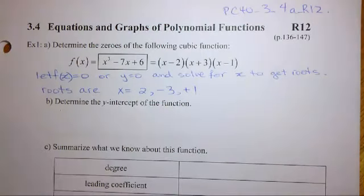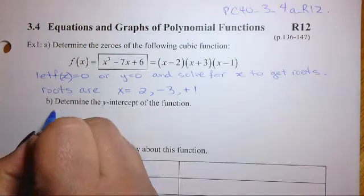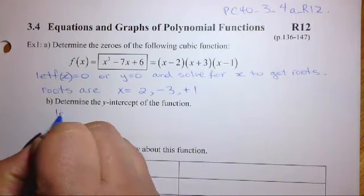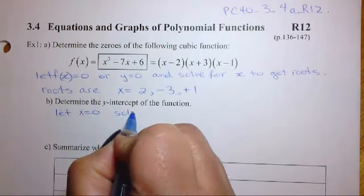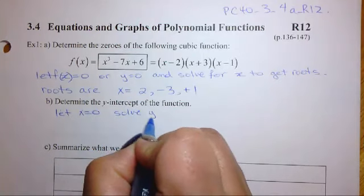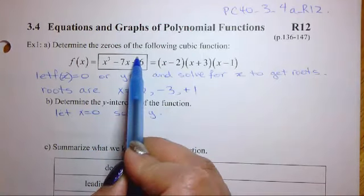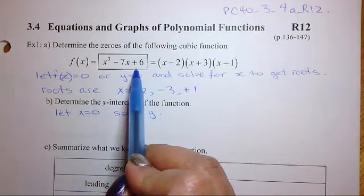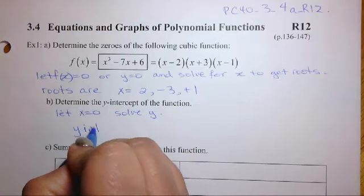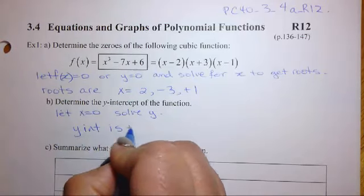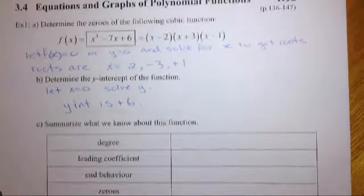Next, we need to figure out the y-intercept of the function. So in order to figure out the y-intercept of the function, we are going to let x equal 0, and we're going to solve for y. Now, we could look at the unfactored form here and notice that the y-intercept is 6. So here, let's just write y-intercept is positive 6.